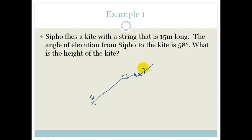Don't know if you guys ever flew a kite. I did when I was young and I had lots of strings with tails. He flies it and this is 15 meters long. His string is 15 meters long. And if he looks up from the point with which he holds it, this angle of elevation is 58 degrees.